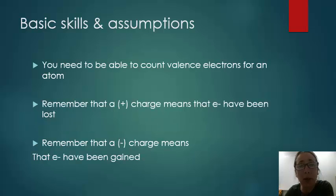Let's review some basic skills and assumptions that you'll need to successfully draw Lewis dot structures. One, you need to be able to count valence electrons for an atom. Remember, whatever column an atom is in tells you how many valence electrons there are if we skip the d block. Remember that a positive charge means that an electron has been lost, and a negative charge means that an electron or electrons have been gained.